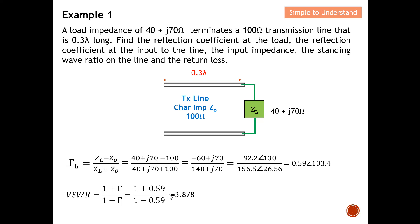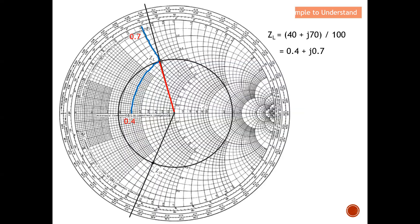Now I'm going to show you how to find these quantities using the Smith chart. The load given is 40+j70 Ω. We divide by the characteristic impedance of 100 Ω to obtain the normalized value: 0.4+j0.7. I will do a quick explanation of how to plot these two values onto the Smith chart. The real value plots along the horizontal line, and the imaginary value determines the vertical position.